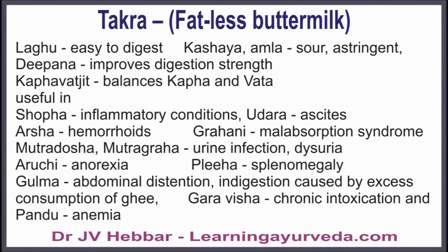Fatless buttermilk is easy to digest, sour, astringent, improves digestion strength, and balances kapha and vata. It is useful in inflammatory conditions, ascites, malabsorption syndrome, urine infection, dysuria, anorexia, splenomegaly, and abdominal distension. It is also useful in indigestion caused by excess consumption of ghee, chronic poisoning, and anemia.